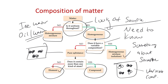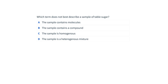Let's go into Carmen for a couple of quick questions in today's lecture survey. The password for today is 'sig figs,' which we'll be getting into shortly. The first question: which term best describes table sugar? Think about whether it contains molecules, is a compound, appears homogeneous, or is a heterogeneous mixture.